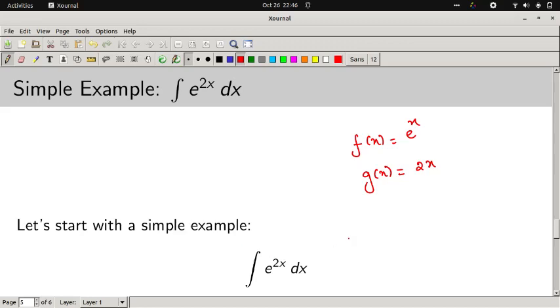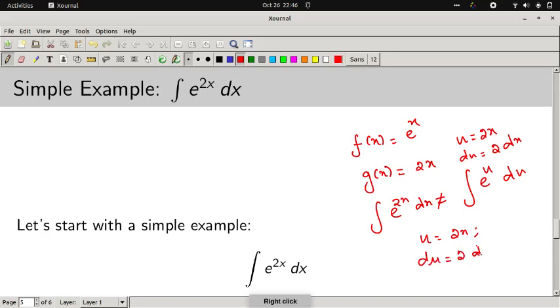But we cannot use it directly because if you are taking u equal to 2x, then du equals 2 times dx. But here the 2 is not there, so we want to use it in such a way. We will take u equal to 2x, du equal to 2 times dx.